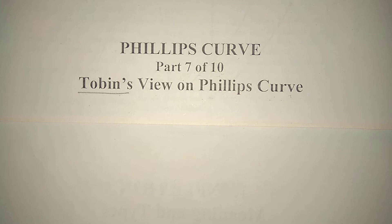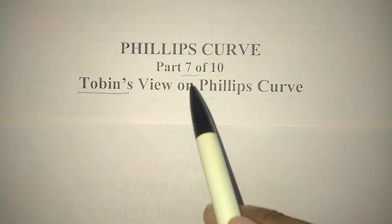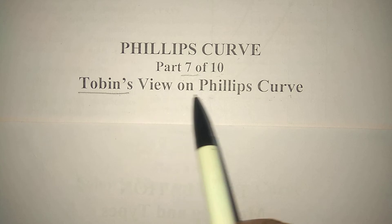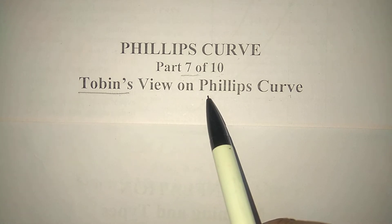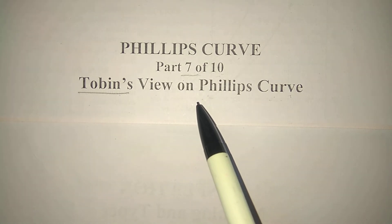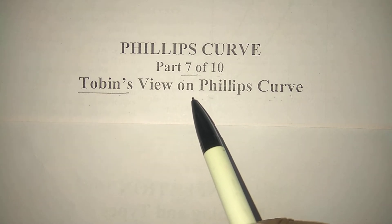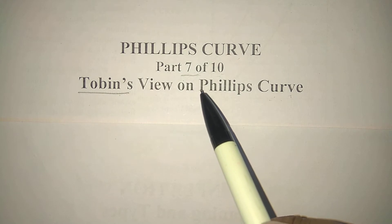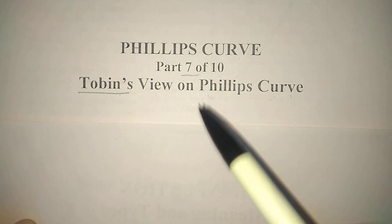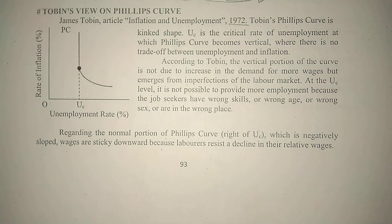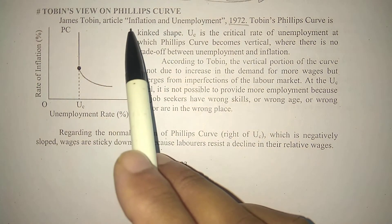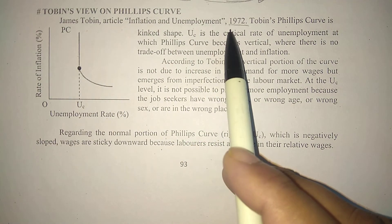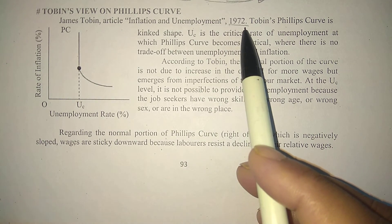This is Part 7. Here we will discuss Tobin's view on the Phillips curve. James Tobin was an American economist who taught at Harvard and Yale universities. He advocated the ideas of Keynesian economics and government intervention to stabilize output and avoid recessions.